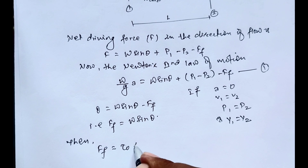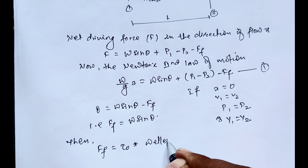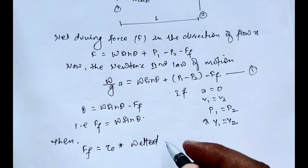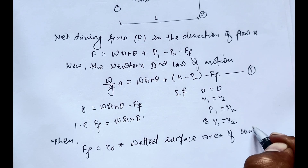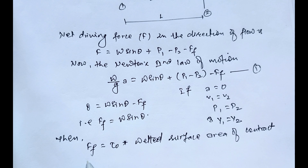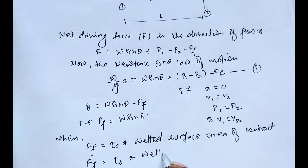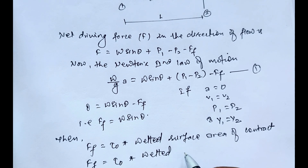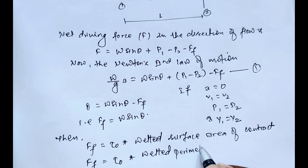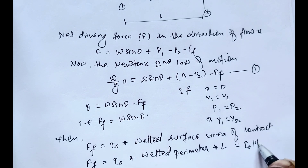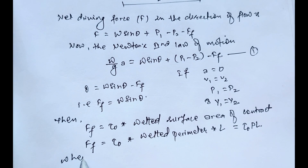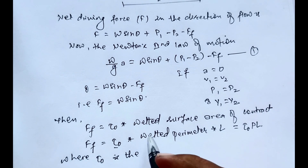Therefore F_f equals W sine theta. This friction force F_f equals tau-naught into P times L, where tau-naught is the average shear stress on the wetted perimeter.